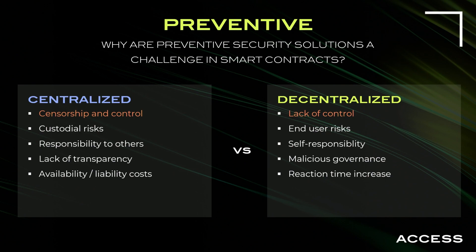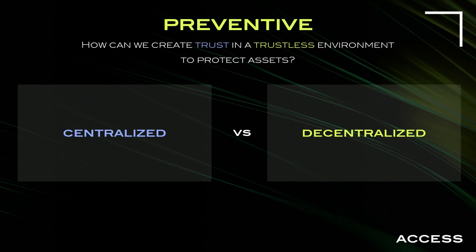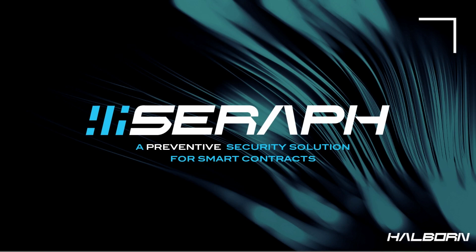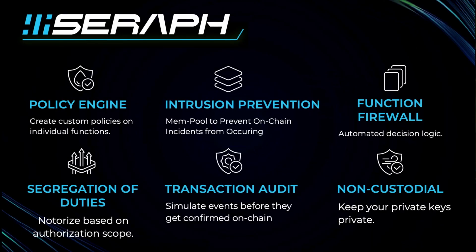How can we do preventive and find the right balance? The key question is: can you create trust in a trustless environment to protect things? We're launching a solution called Serif very soon — it's a preventive solution we've made patents for and started offering to address this area. It focuses on where the risk is and lets the rest of the infrastructure act in a decentralized way. There are five patents on it because it's so new. Think of it as a policy engine on-chain.